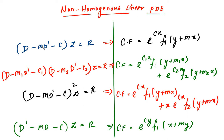Try to compare the first one and the last one. If d is coming first, you apply e power Cx f1 of y plus mx. But if d dash is coming first, instead of x and y you have to interchange x and y. From that you may get the complementary function of the last expression like e power Cx f1 of x plus my.